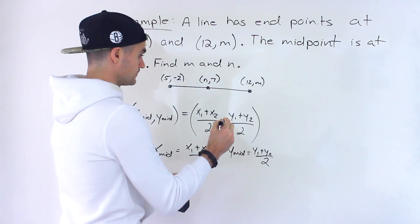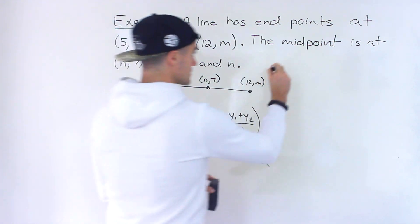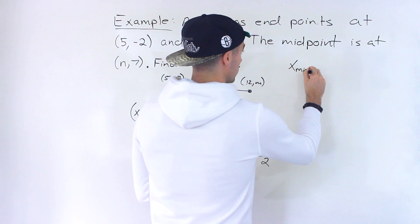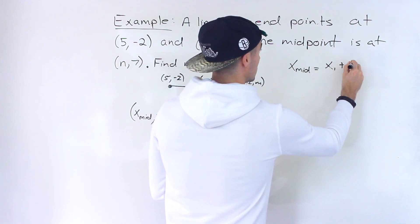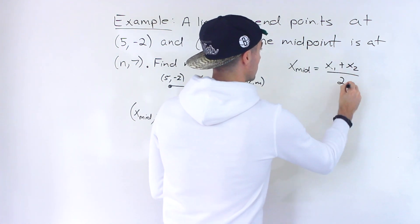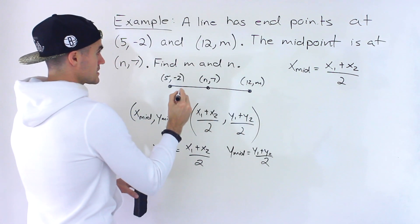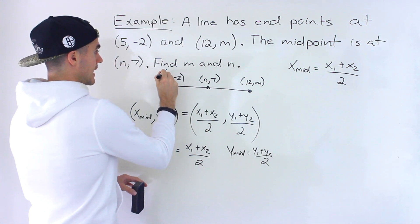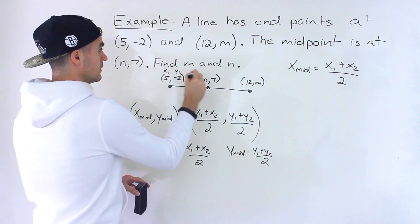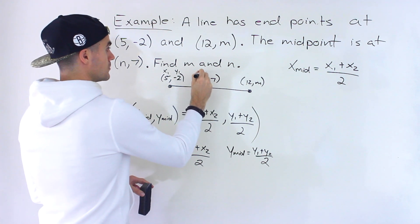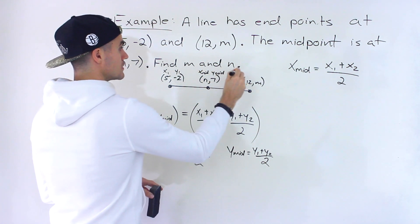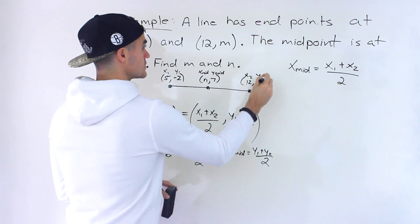So notice that, let's start off with the x value. So the x value of the midpoint, let me rewrite the equation up here. Okay, so this is x1, this is y1, this is the x value of the midpoint, this is the y value of the midpoint, this is x2, this is y2.